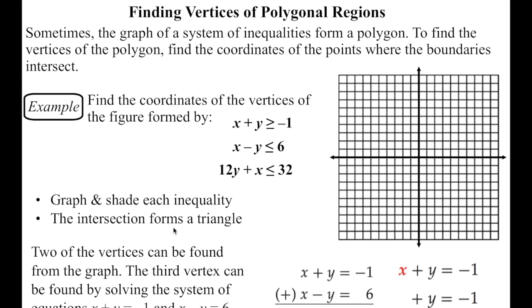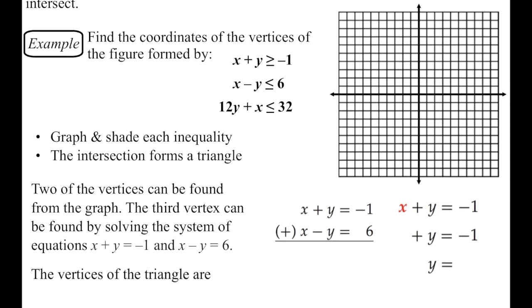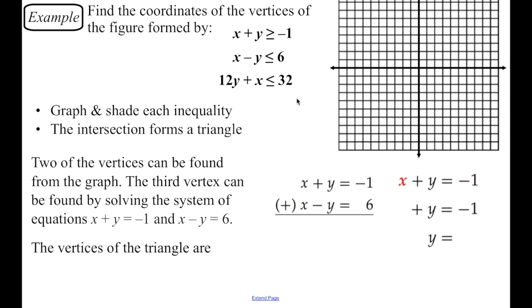So here's an example where we're going to find the vertices of a polygon that's created by these boundary lines. And so the first example here, it says, find the coordinates of the vertices of the figure formed by these three inequalities. So first of all, we're going to graph and shade each of those inequalities, and then we're going to find that intersection. And I've told you that forms a triangle.